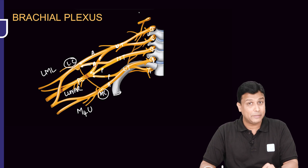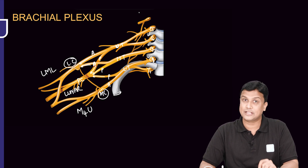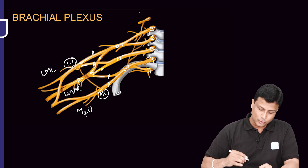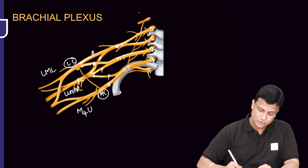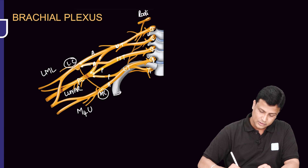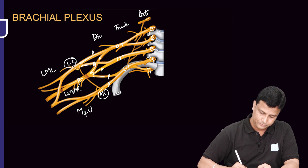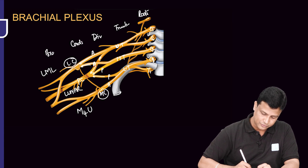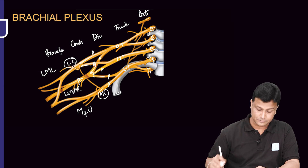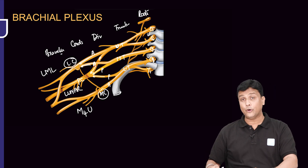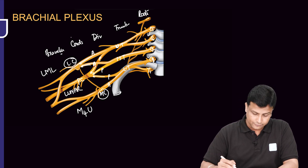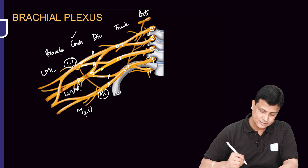Now focusing on MCQs — the brachial plexus has five parts: roots combine to form trunks, trunks divide into divisions, divisions combine to form cords, and cords give rise to branches. Branches come primarily from the cords.